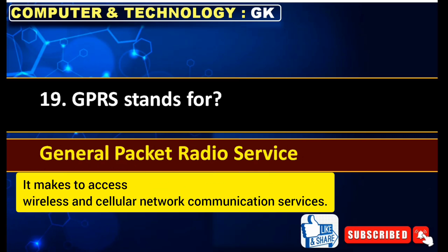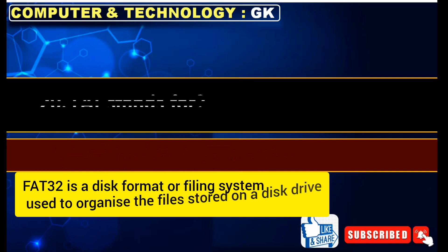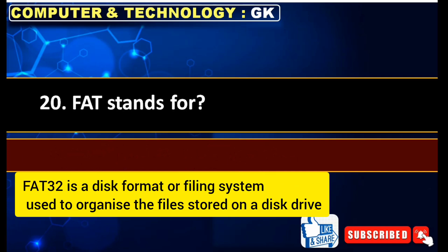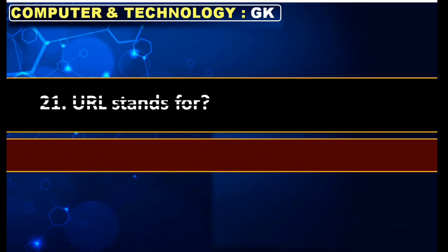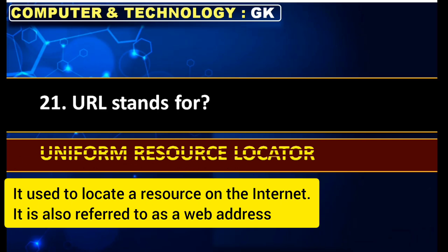GPRS stands for General Packet Radio Service. FAT stands for File Allocation Table. URL stands for Uniform Resource Locator.